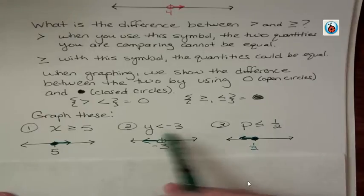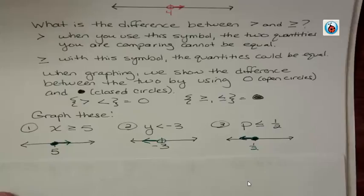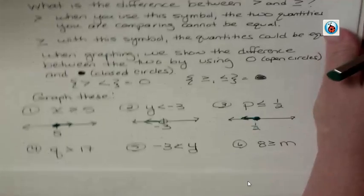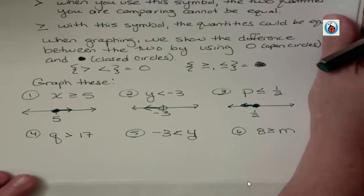Notice that less than, less than or equal to, both shade to the left. One of them, though, has an open circle, and one has a closed. You should try these on your own to see how you're doing on these, and then come back and check in.